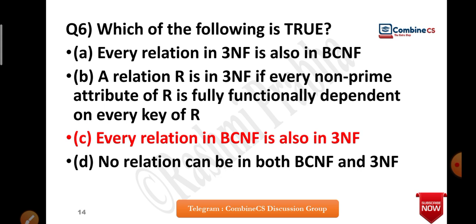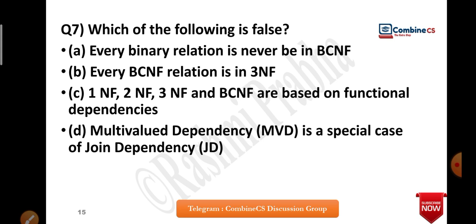Option B — that 3NF requires full functional dependency — is false for 3NF. So which normalization form does hold fully functional dependency? Is it 2NF, BCNF, 4NF, or 5NF? Tell me in the comment section. Now, which is the false statement? Every binary relation is never in BCNF — this is false, because every binary relation with only a single attribute will always be in BCNF. Every BCNF relation is in 3NF — true. 1NF, 2NF, 3NF, and BCNF are based on functional dependency — true. Multi-valued dependency is a special case of join dependency — true. So option 1 is false.